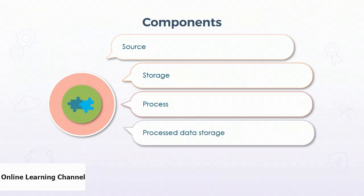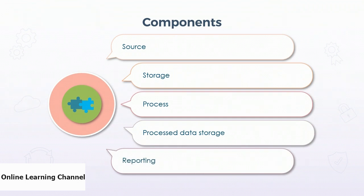Once data has been processed, it is moved into the analytical data store. For structured data, this is frequently a data warehouse like Azure Synapse Analytics or a NoSQL service like Azure Cosmos DB. For unstructured data, this can be a Blob Storage account. Reporting services are used to define and visualize the outcomes derived from the data — visualization tools like Power BI can be leveraged directly from Azure or standalone technologies can also be used. Notebooks using Python can be used externally as well.